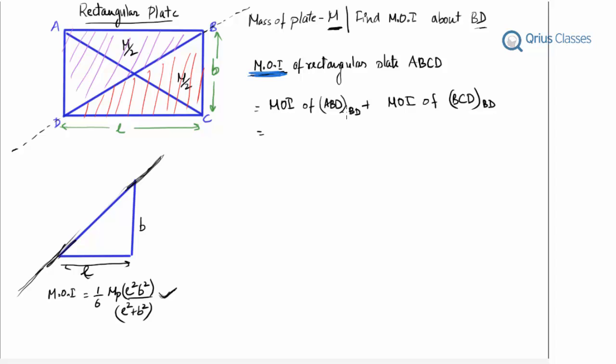So the moment of inertia of ABD can be written as 1/6 times the mass of the plate, which is M/2, times L²B²/(L² + B²). This is L length, this is B, so this will also be B and this will be L.